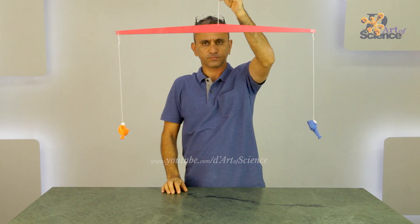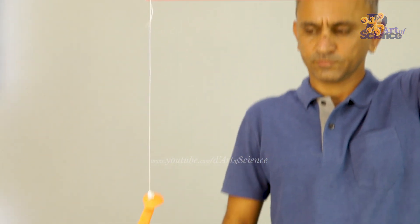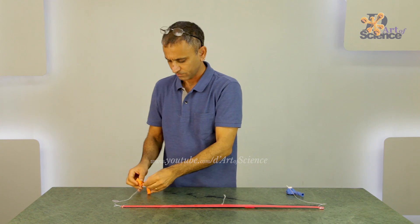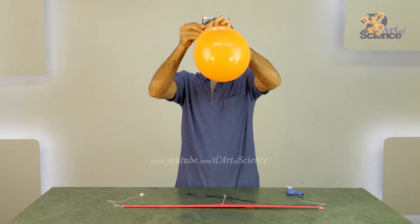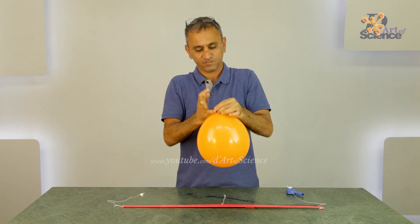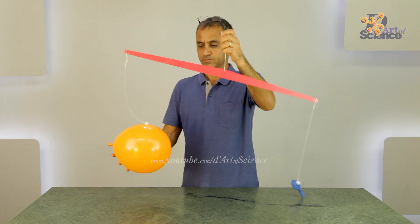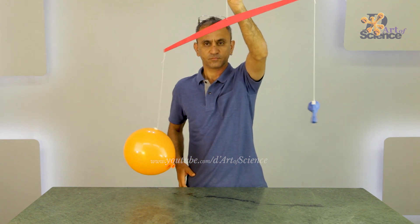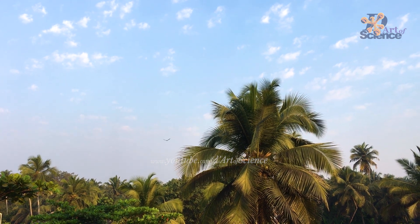Air has weight, and we can see this in a simple experiment where two balloons are delicately balanced. When air is blown into one of the balloons, the only thing that changes is that air is added to that one balloon. That balloon actually gets heavier, which means air has weight. So all the air above us has a huge amount of weight.